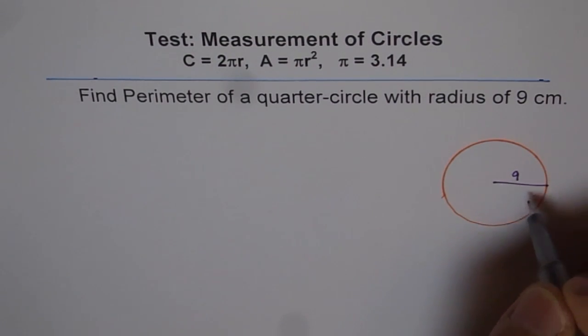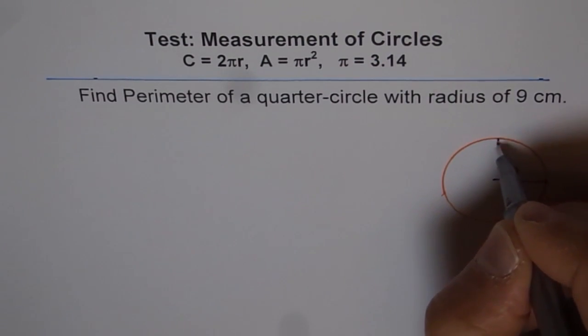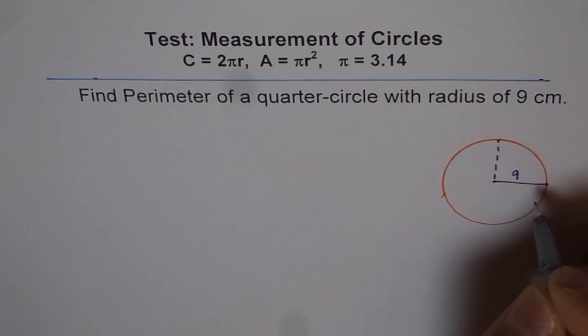Let us draw the quarter of this circle. This is full circle and quarter will be like this. So that is the quarter of the circle.